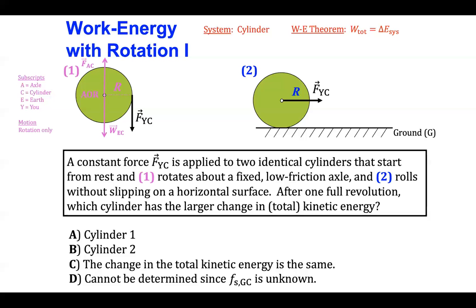To calculate the work done on the cylinder by external forces, notice that the weight force and the force due to the axle on the cylinder both act through the axis of rotation, but they will not do any work because as the cylinder rotates about the axis of rotation, those two forces cannot create any torque about the axis of rotation. So the only force that can create some type of torque on the system is the force that you apply to the cylinder.